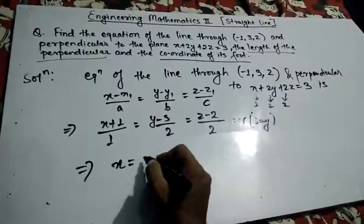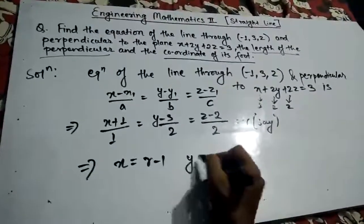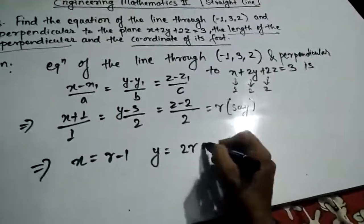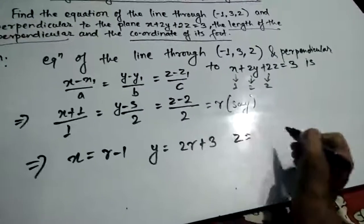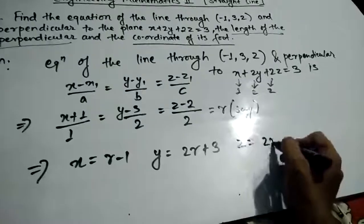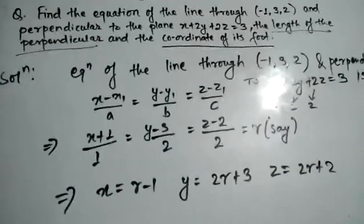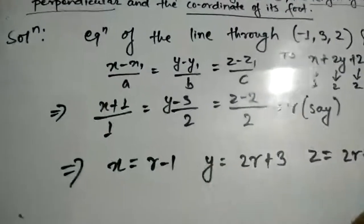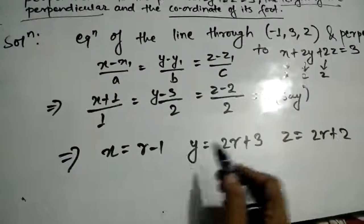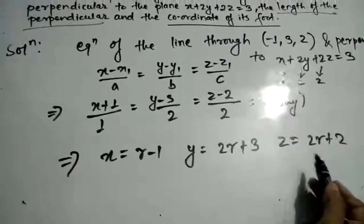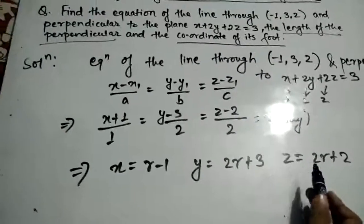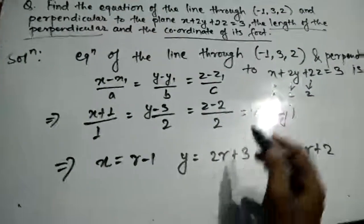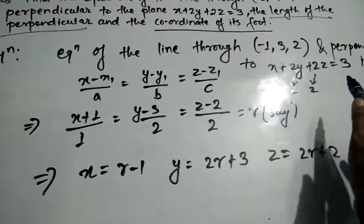So x = r - 1, y = 2r + 3, z = 2r + 2. Now we need to find r. We know the foot point lies on the plane x + 2y + 2z = 3, so we substitute these parametric coordinates into the plane equation.